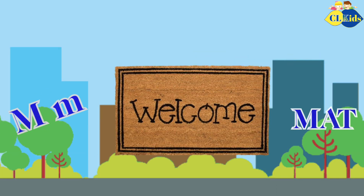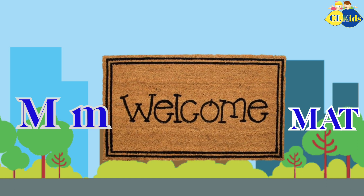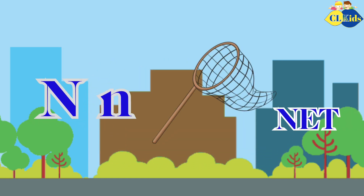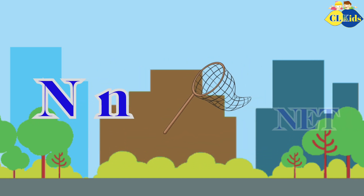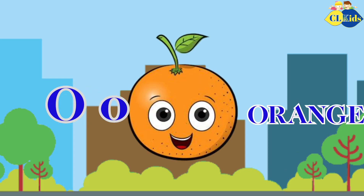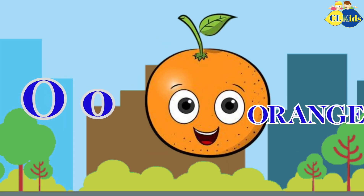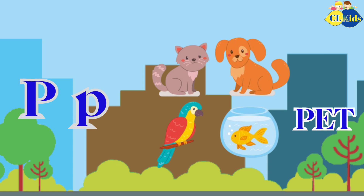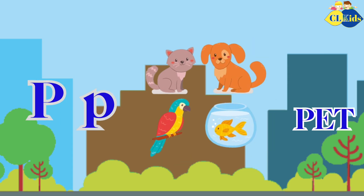M is for Mat, M-M-Mat. N is for Net, N-N-Net. O is for Orange, O-O-Orange. P is for Pet, P-P-Pet.